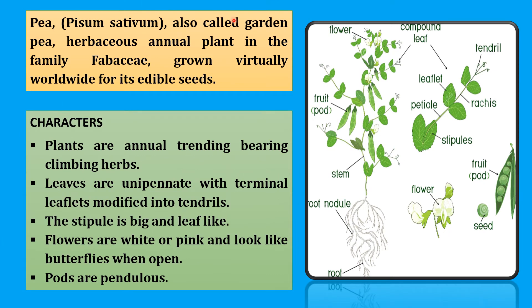Pea, also called Garden Pea, is a herbaceous annual plant in the family Fabaceae, grown virtually worldwide for its edible seeds. All of us know that pea is a most common edible seed — pea is 'polau', hope everyone knows and is familiar with this term. Pisum sativum is the scientific name of pea. Pisum is the genus and sativum is the species.